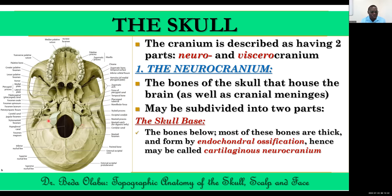Looking at the bones constituting the cartilaginous neurocranium, we can identify the condyles of the occipital bone, the basilar part of the occipital bone, and the petrous part of the temporal bone. The styloid process and mastoid processes are also parts of the temporal bone. Going anteriorly, there is the sphenoid with its different parts: the pterygoid plates, the sphenoid body, and the greater wing. The lesser wing is not visible from below but is seen from the top.